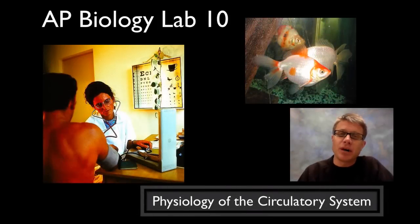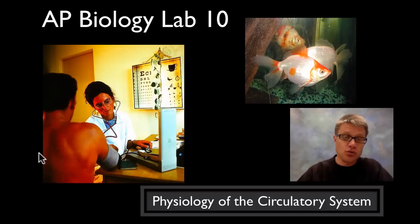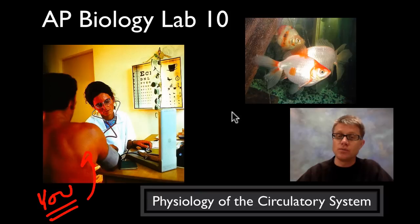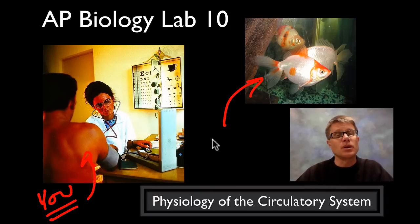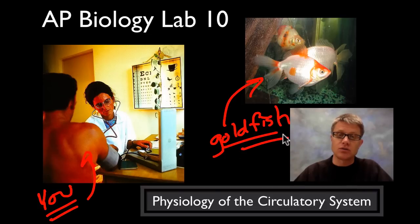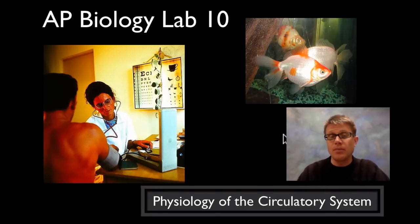Hi, it's Mr. Anderson. Welcome to AP Biology Lab 10. This is on the physiology of the circulatory system. It has two parts to it. The first thing we're going to do is measure blood pressure. And then the next thing we're going to do is measure how temperature affects the circulatory system. In this case we'll use goldfish — you could use Daphnia to do this, but goldfish work. So those are the two things we'll do in this lab.